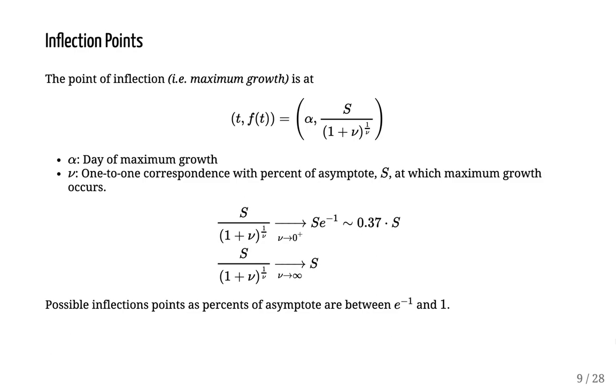For this parametrization, the point of inflection or the point of maximum growth where the second derivative crosses zero is at the point where t equals alpha. So alpha gives us the position on the x-axis or time where maximum growth occurs. Nu gives us the position on the y-axis relative to the asymptote where maximum growth occurs. When nu goes to zero and we get the Gompertz model, the point of inflection happens at around 37% of the maximum asymptote.